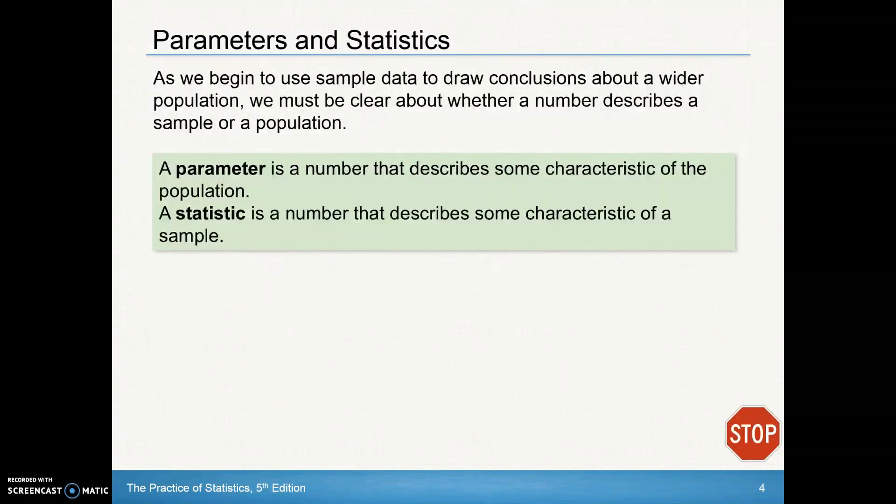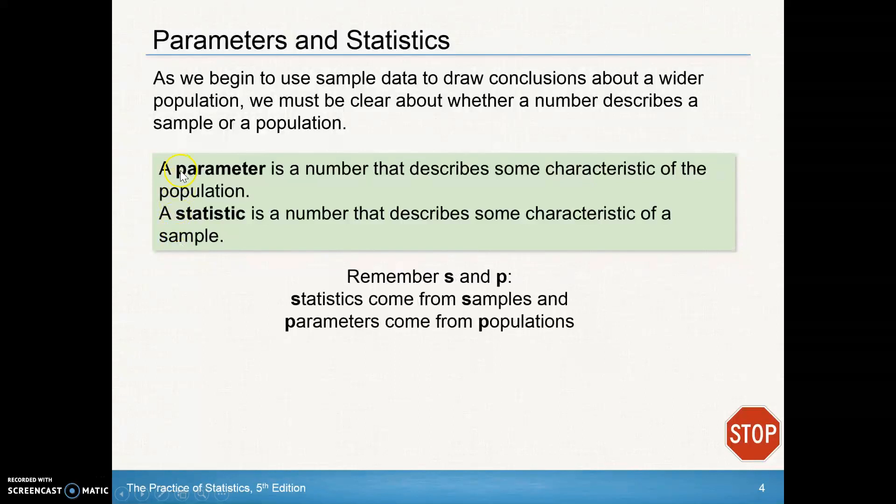So as we begin to use sample data to draw conclusions about a wider population, we've got to be clear about whether a number describes a sample or a population. We've talked about this before in earlier chapters. A parameter is a number that describes some characteristic of the population. So parameter, population. A statistic is a number that describes some characteristic of a sample. So a statistic comes from a sample. A good way to remember that is the s and the p. Statistics come from samples, parameters come from populations.